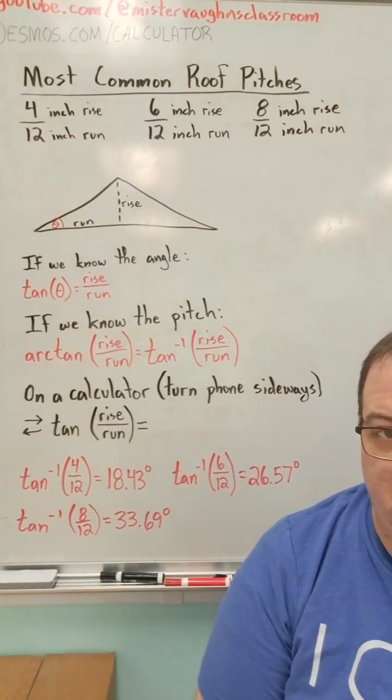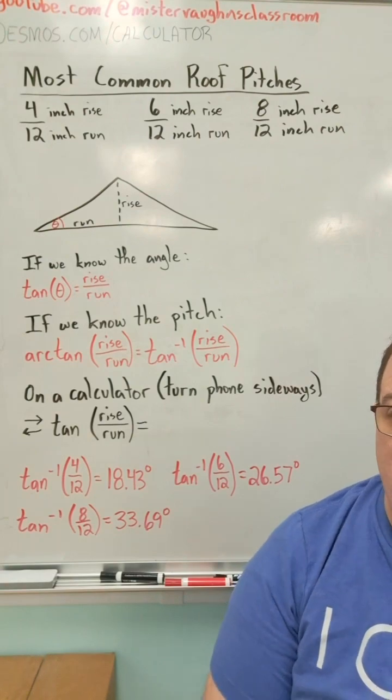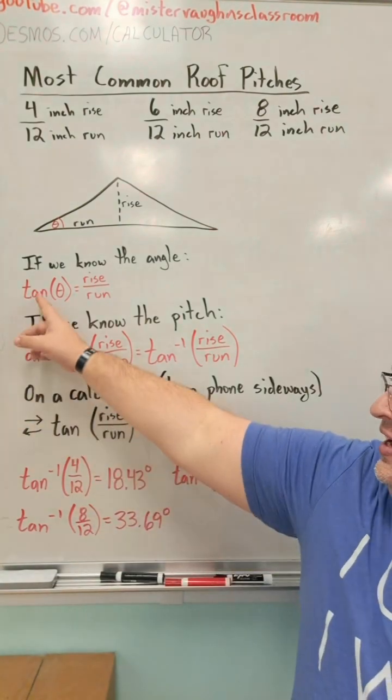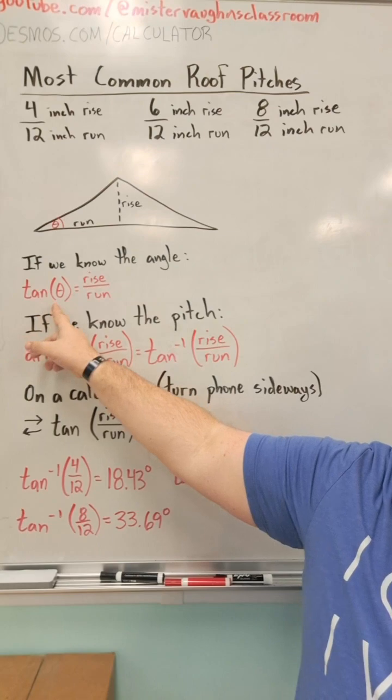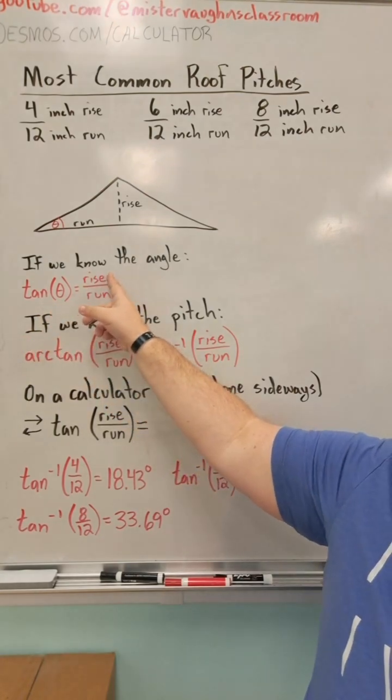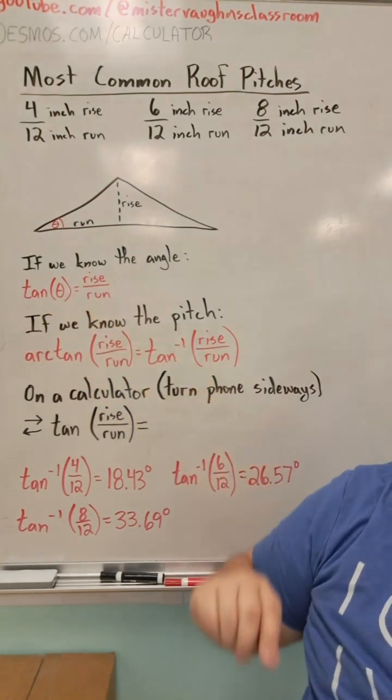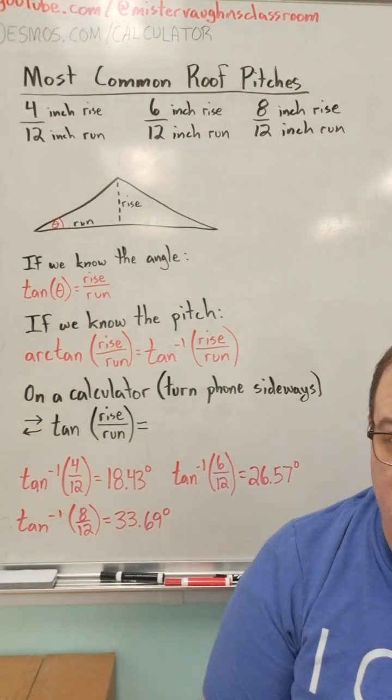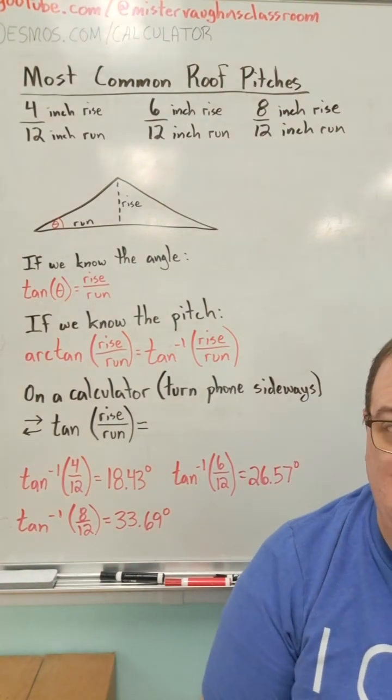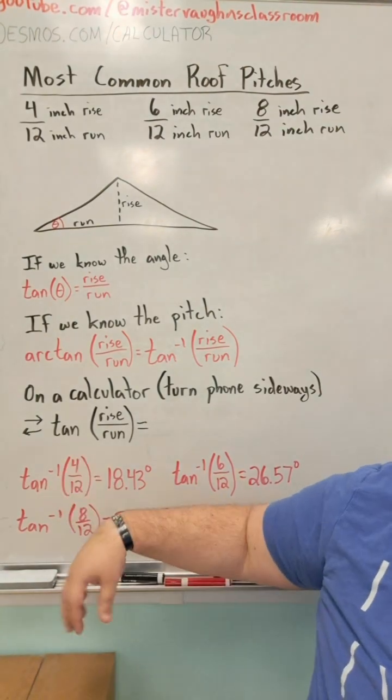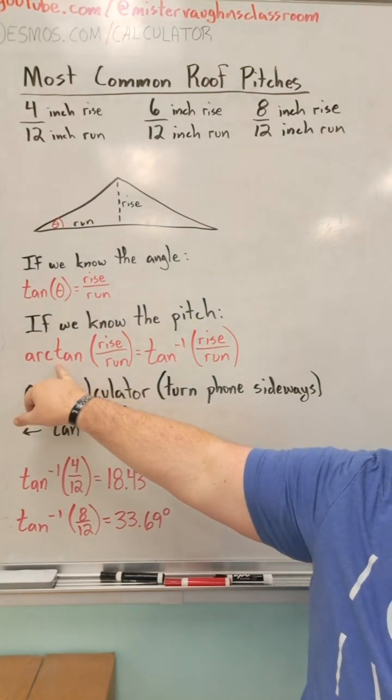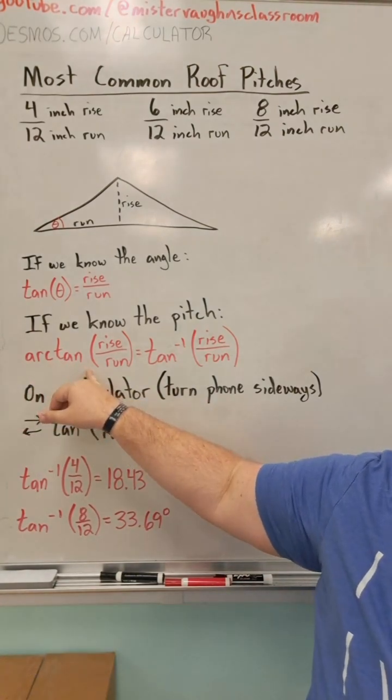Now this gets into trigonometry. If you know the angle, then the tangent of the angle is going to tell you the rise over run. But in most situations, you're going to know the pitch. So if you know the pitch, then you're looking for the arc tangent of the rise over the run.